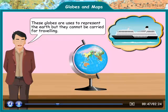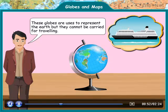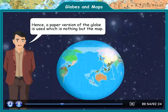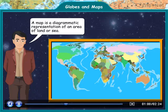These globes can be used to represent the Earth, but they cannot be carried for traveling. Hence, a paper version of the globe is used, which is nothing but a map. A map is a diagrammatic representation of an area of land or sea.